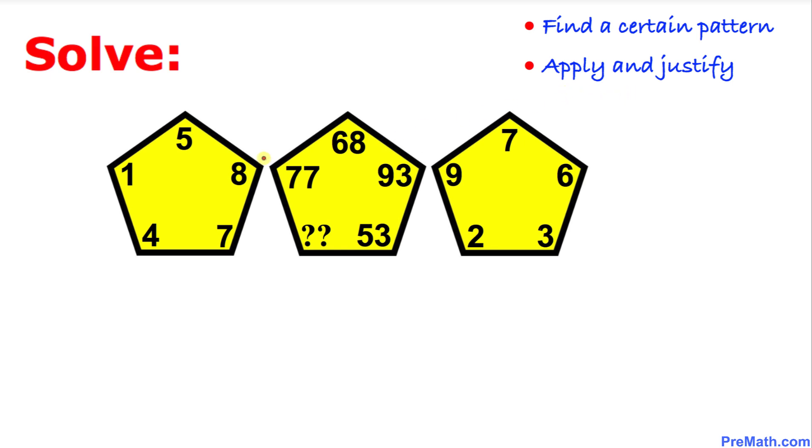When we look at these left and right hand side pentagons we can see a pattern. If I square this one, 5 squared is going to give us 25 and 7 squared is going to give us 49. If we add these two numbers that is going to give us 74.